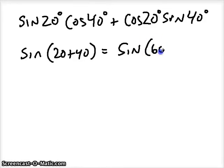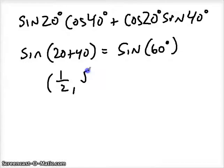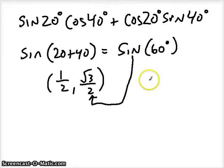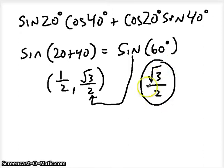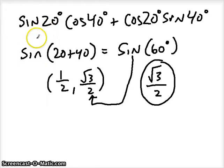That makes it a much easier problem to solve — we're just finding sine of 60 degrees. Sine of 60 degrees is the y value of a 60 degree angle. The coordinates of a 60 degree angle are 1 half and square root of 3 over 2. Since I want sine, I want the y value, so the final answer is square root of 3 over 2. Sometimes you take the formula on the right side and convert it back to the left side; other times you start with the right side and simplify from there.